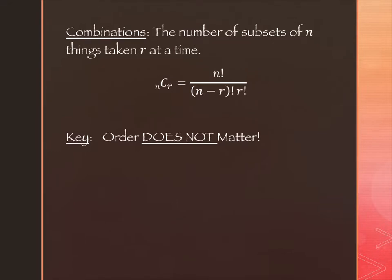Comparing the combination formula to the permutation formula, what's the only thing that's different? The extra r factorial on the bottom. So for combinations, the denominator includes both (n minus r) factorial and r factorial.